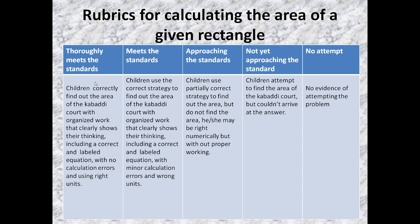So, the first type of children. The children correctly find out the area of the cupboard or court, which is rectangular in shape, with organized work that clearly shows their thinking. Including a correct and labeled equation, with no calculated errors and using right units. So, they don't get any errors in calculation. And also, they use the right measurement, right units. So, this is level 1.